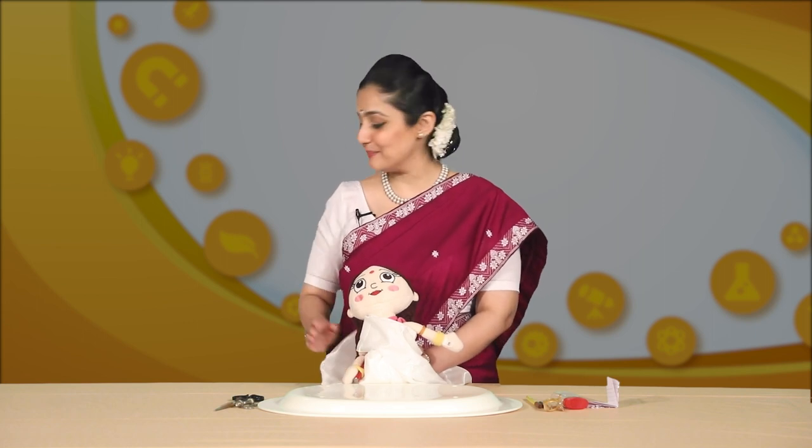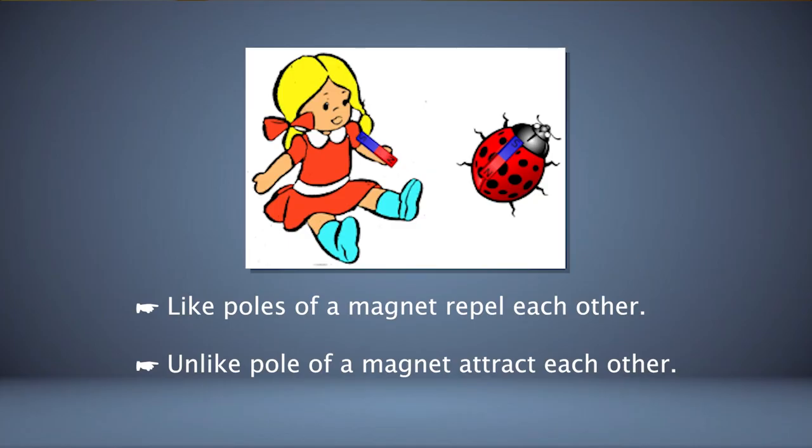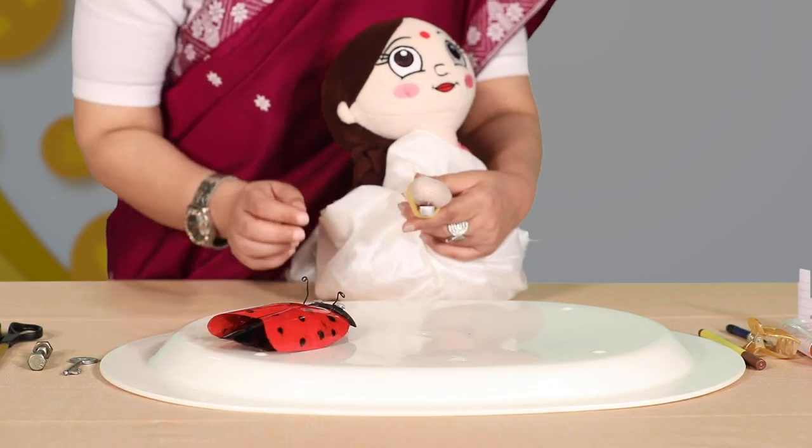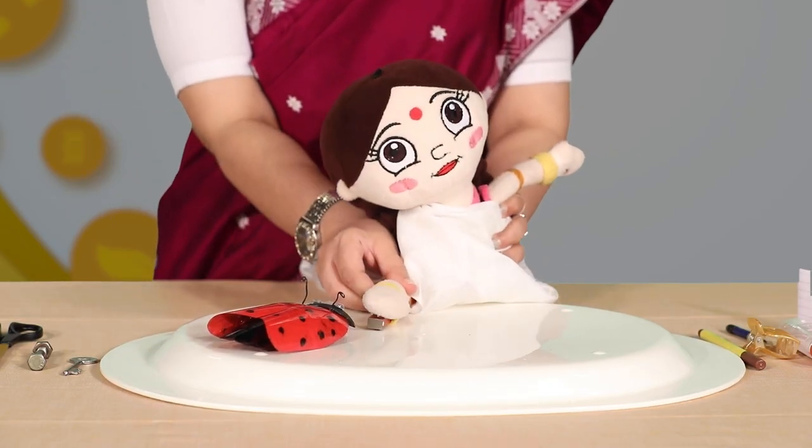Take a toy bug, a doll and two bar magnets. If the toy bug or doll is not available, students can be encouraged to make these out of cardboard or any other material available. Ask the students to think about how to fix the magnets on the doll and the bug to make them repel each other. Fix the magnets in the arm of the intelligent doll and in the bug in such a way that the like poles are always facing each other.